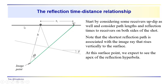We're going to add some receivers up-dip because now we don't have symmetry about the source point as we did in the horizontal layer case, where we only had to consider one side. Now we have to consider what's happening up-dip as well as down-dip, because the shortest reflection path corresponds to an image ray that came directly up to the surface and intersected the surface at right angles — this would be the reflection point.